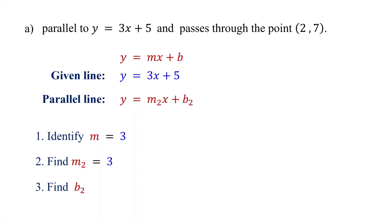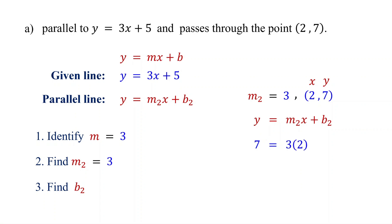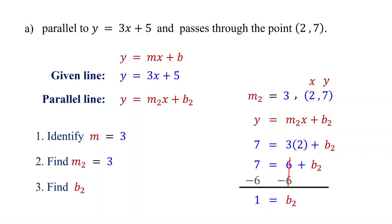The next step is to find the y-intercept of the parallel line. To do this, use its slope and the given point. Since the parallel line passes through this point, the point's coordinates satisfy the equation y equals m2x plus b2, so we can substitute them for x and y into the equation. Replace y with 7, m2 with 3, and x with 2. Now solve for b2. 3 times 2 is 6. Then subtract 6 from both sides to isolate b2. On the left, we get 1; on the right, these cancel, leaving b2. Therefore, b2 equals 1.